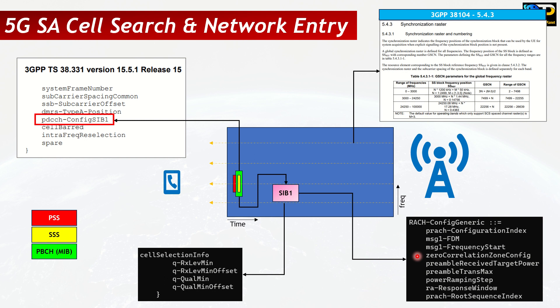Once the UE has the RACH configuration it can initiate random access, after which it gets the RRC connection setup and radio bearer setup. In summary: the UE scans the GSCN raster to find the SSB, reads the PBCH to find SIB1, checks QRX level min against RSRP for cell selection, then uses the RACH configuration from SIB1 to initiate random access and set up the RRC, radio bearers, and PDU session. I hope you liked this quick overview of 5G standalone cell search — stay tuned for the next one, thank you!